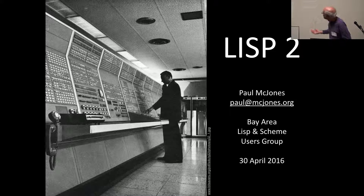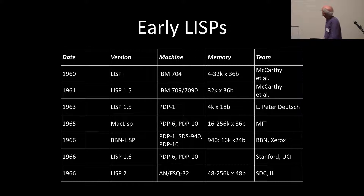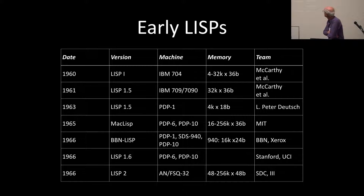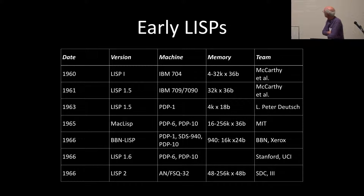LISP-2 came along a few years after that. The first few LISPs were done by MIT people under McCarthy's leadership, and those were ported to a few other military machines. A young high school student named Peter Deutsch came along and did a LISP for the PDP-1 — that had a four-kilo-word address space, 18-bit word, so eight kilobytes. It was a pretty stripped-down LISP.